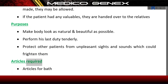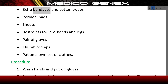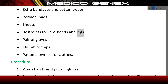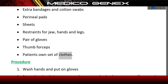Articles required: articles for bath, extra bandages, and cotton swabs; perineal pads, sheets, restraints for jaw, hands, and legs; a pair of gloves, thumb forceps, and the patient's own set of clothes.